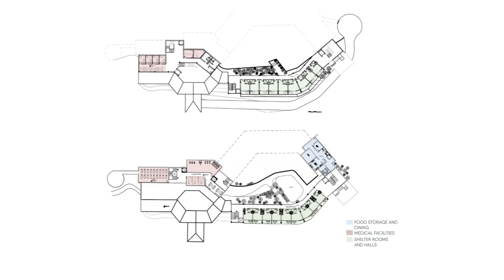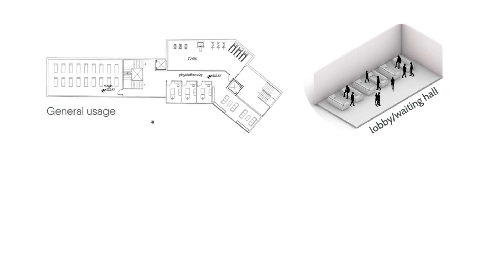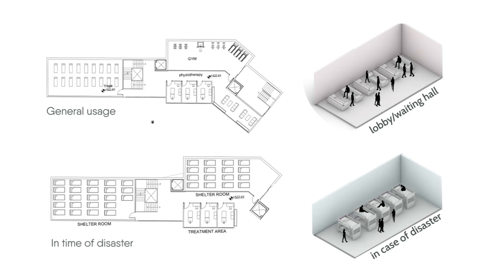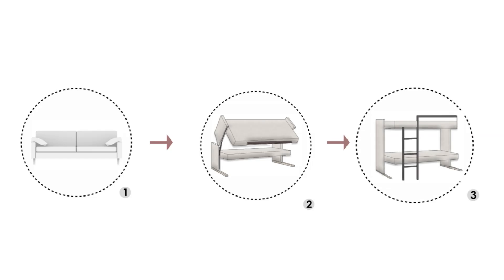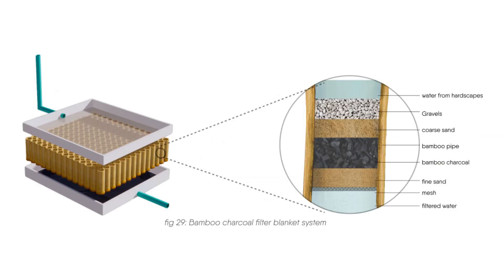The plan shows how spaces are in use during general usage days as a wellness center. The plan below depicts how spaces convert themselves into shelter rooms to provide a safe place for people in the time of disaster. The graphic shows how furniture is innovated in a way that can be folded and used as bunk beds in the time of disaster. Foldable furniture offers a versatile solution for modern living spaces, seamlessly blending functionality with space-saving design.